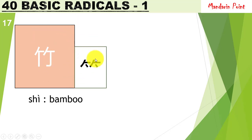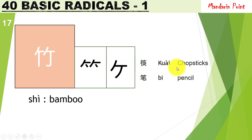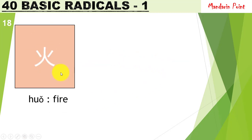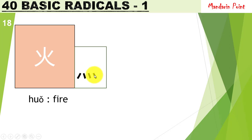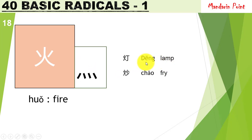The radical 竹 zhú refers to bamboo. Its short form is used very commonly, while another short form is rarely used. We can see it in 筷 kuài meaning 'chopsticks,' which are made of bamboo, and in words for pencil or pen — in old times pens were made of bamboo. The radical 火 huǒ means 'fire' and also has a variant of four dots placed at the bottom of characters. For example, 灯 dēng meaning 'lamp' — in older times lamps were lit with fire. And 炒 chǎo meaning 'fry' — you always fry over fire, so the fire radical is present on the left side.